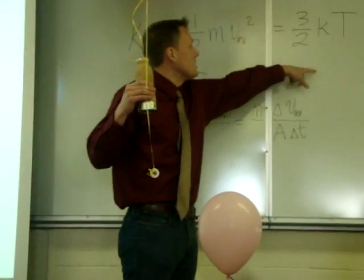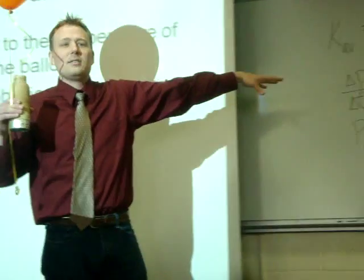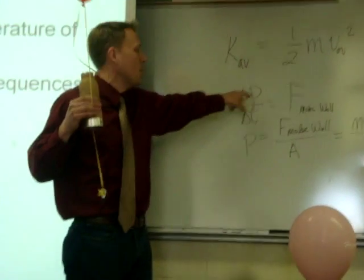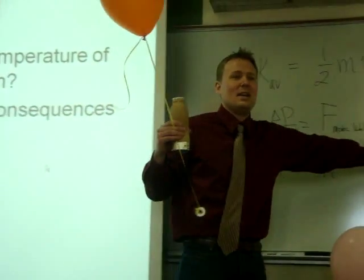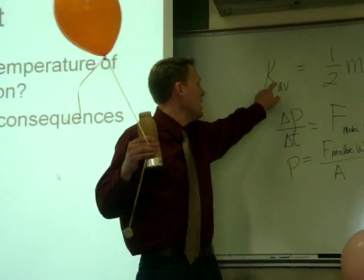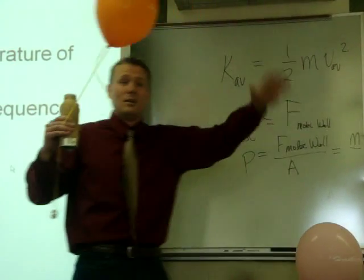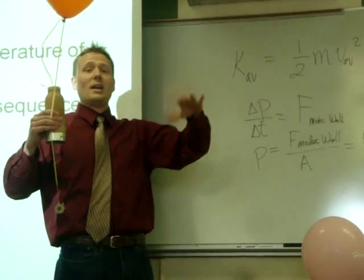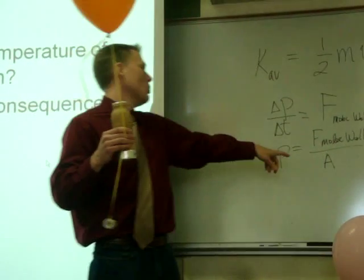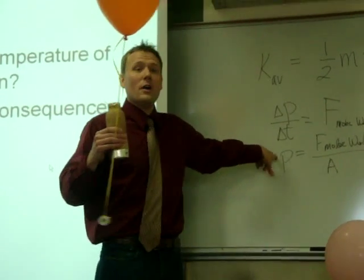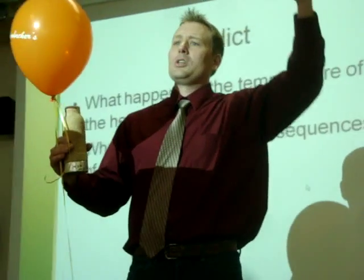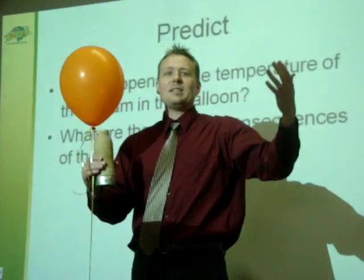So as temperature goes down, what's going to happen to the average kinetic energy of these things? It's going to go down. What does that mean about the change in momentum? The average kinetic energy goes down, means that our velocity is going to be decreasing — we're not going to have as large a change of velocity. These things interact with the wall of the balloon, and therefore the pressure inside goes down. What happens to the atmospheric pressure? It stays the same.